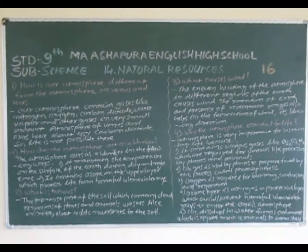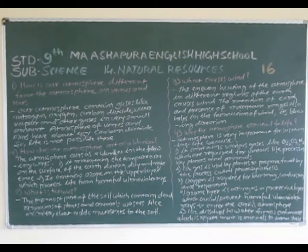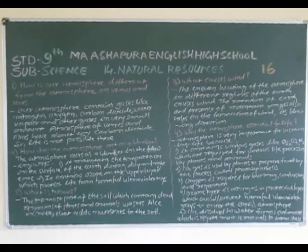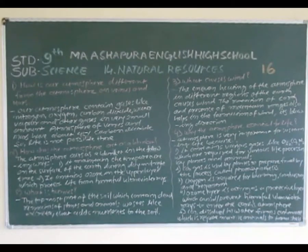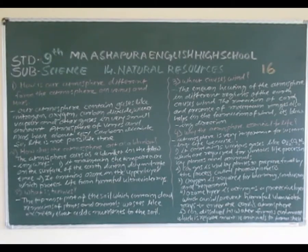Recap — Question 1: Our atmosphere contains gases like nitrogen, oxygen, carbon dioxide, water vapour and other gases in small amounts. The atmosphere of Venus and Mars has about 95% carbon dioxide, so life is not possible there. Question 2: Atmosphere acts as a blanket — it maintains surface temperature during day and night, and contains ozone in the upper layer protecting life from harmful ultraviolet rays. Question 3: Uneven heating of the atmosphere in different regions of the Earth causes wind. The rotation of the Earth and presence of mountain ranges also help in the formation of wind.